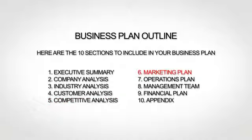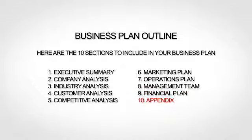The sixth section is your marketing plan, where you lay out your marketing strategy. The seventh section is your operations plan, where you explain how you actually run or will run your business. The next section, the management team, is where you provide bios of your team. The ninth section is your financial plan, where you give financial forecasts. And finally, the tenth and last section is your appendix, where you provide any additional supporting information.